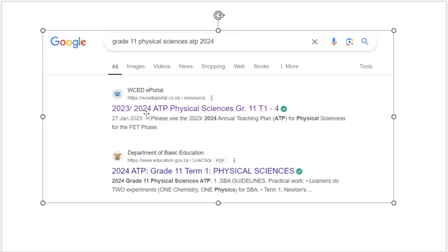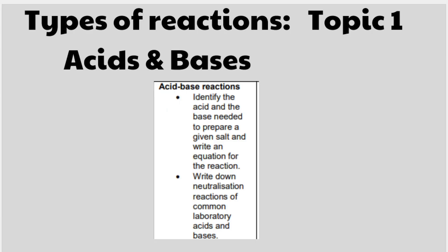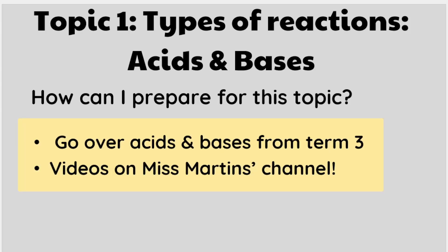You can find the ATPs by typing the following into Google and downloading them. The first thing in term 4 is finishing off acids and bases from term 3. If your teachers have followed the ATPs, you should have started types of reactions and acids and bases, and you are meant to finish that first this term. Go over acids and bases from term 3 and watch videos on my channel if you need more help.